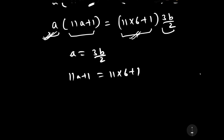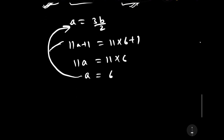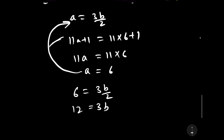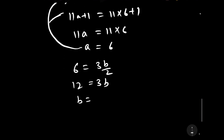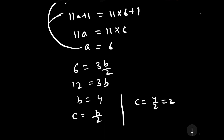Solving the equation: 11a equals 11 into 6, so cancelling 11 gives a equals 6. Putting the value of a into a equals 3b by 2: 6 equals 3b by 2, so 12 equals 3b, and b equals 4. Since c equals b by 2, we get c equals 4 by 2, which equals 2.